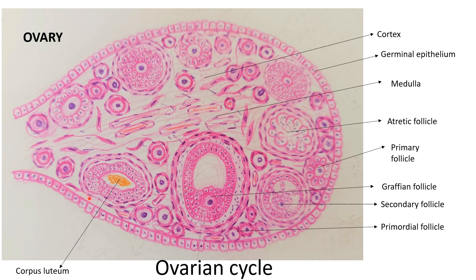After the germinal epithelium you have the tunica albuginea. Then you have the outer cortex and inner medulla. In the cortical region of the ovary you can see follicles at various stages of development, from primordial follicle to primary follicle, then secondary follicle, mature Graafian follicle, and corpus luteum. In the medullary part you mainly have blood vessels in the form of sinusoids and a few smooth muscles.